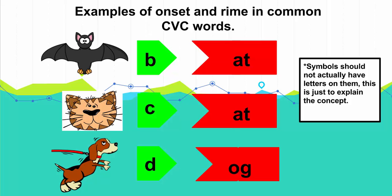Here are just a few more examples to demonstrate onset and rhyme. The green pieces are the onset and the red is the rhyme. The puzzle pieces illustrated here are used in the 95% Group lessons to help students visualize how words can be broken up into different parts. If these materials are not available to you, you can adapt the same concept using different colored cutouts from construction paper.